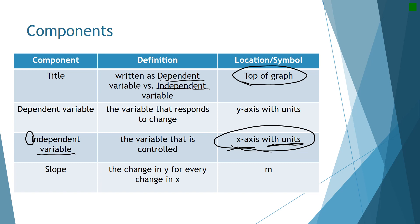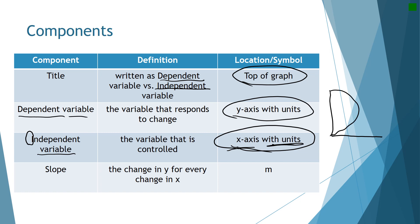Because you changed the independent variable, your dependent variable may change — that's the variable that responds to the change. It goes on the y-axis, and you write down the units. How I remember it goes on the y-axis: you can put a 'd' on the graph. Another saying is, 'Why are you so dependent on me?' So the y-axis always has the dependent variable.